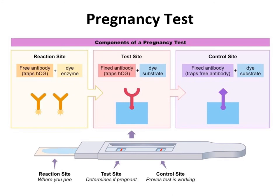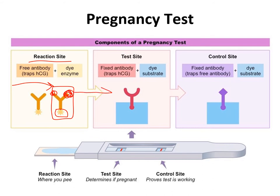One practical application for enzyme-linked antibodies are pregnancy tests. In the reaction site, antibodies specific for the hormone present during pregnancy are conjugated to an enzyme. When you add the urine sample, if the hormone is present it will bind to those enzyme-linked antibodies. As the urine moves by capillary action through the pregnancy test, those antibodies will be trapped by a fixed antibody. The substrate is broken down by the enzyme on the first antibody, causing a color change that indicates a positive reaction.